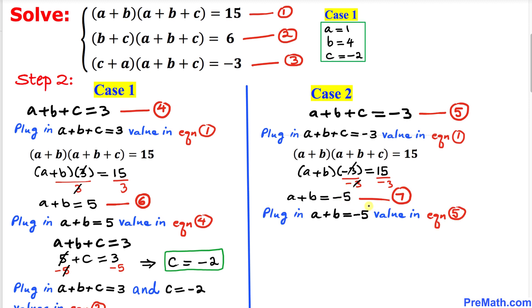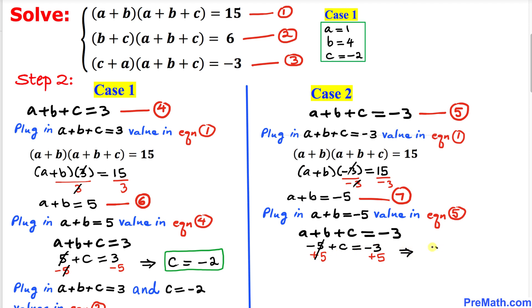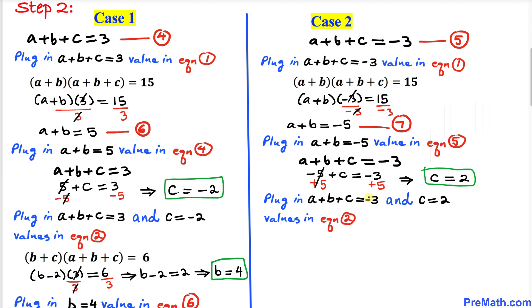We plug a+b = -5 into equation 5: -5 + c = -3. Adding 5 to both sides, c = 2.